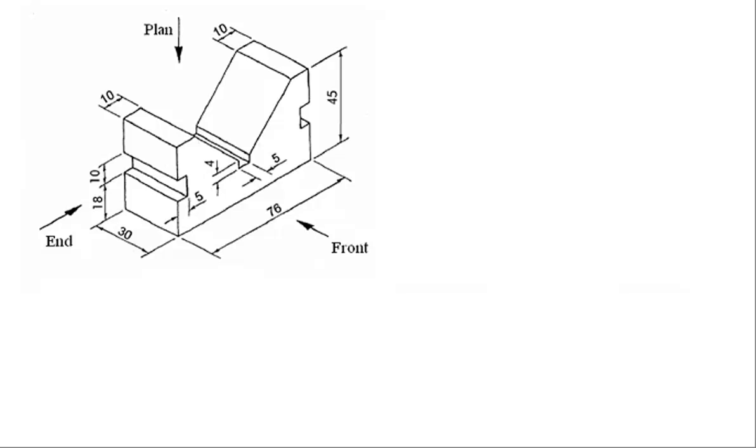This video explains how to do exercise 4.7. In this exercise, you are given an isometric view, as you can see on the screen, with the dimensions and viewing directions front, end, and plane. In the description of the exercise, it says you need to draw orthographic projections, insert angle projections, then add dimensions and center lines.